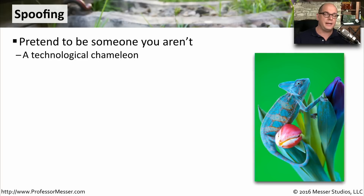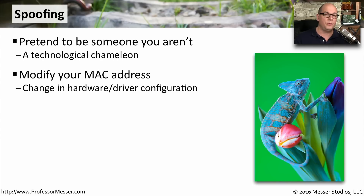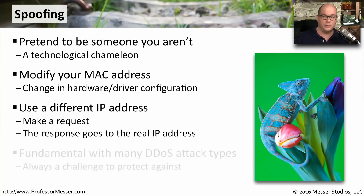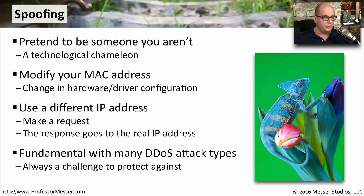A very common security technique that the bad guys use is called spoofing — this is when you pretend to be someone who you are not on the network. One very common way to perform a spoofing attack is to modify your MAC address to duplicate the MAC address of a known trusted device on the network. Another type of spoofing is done where you can change your IP address to somebody else on the network, make a request, and then the response to that request goes to the third party rather than back to you. This is very commonly done with distributed denial-of-service attacks, where you can make a request with one machine but the response goes back to one or a number of different devices on the network.